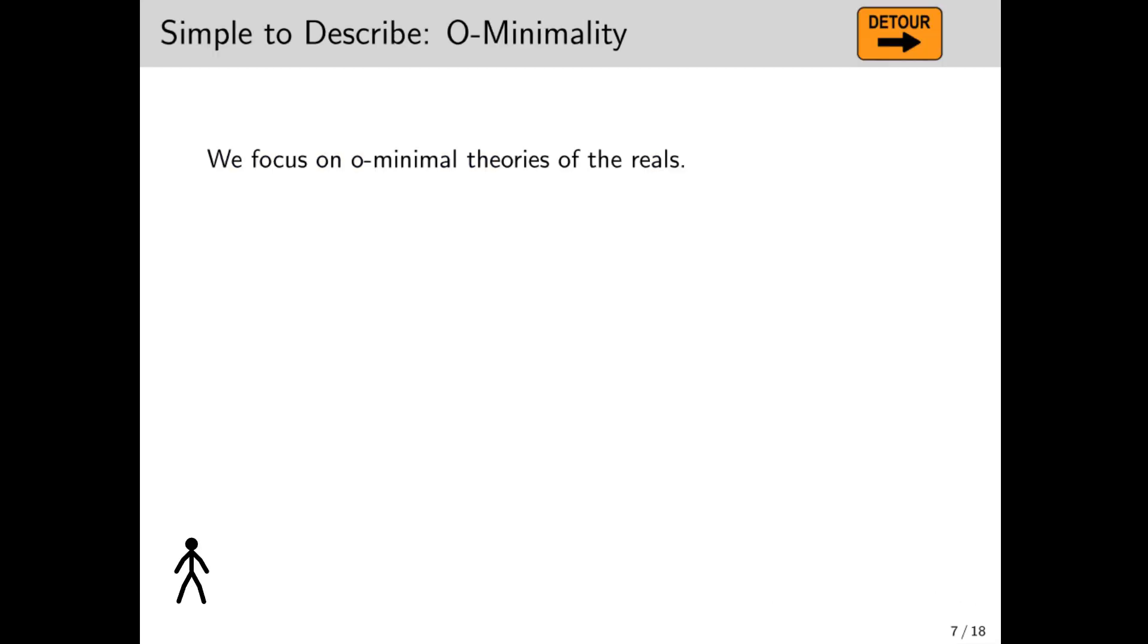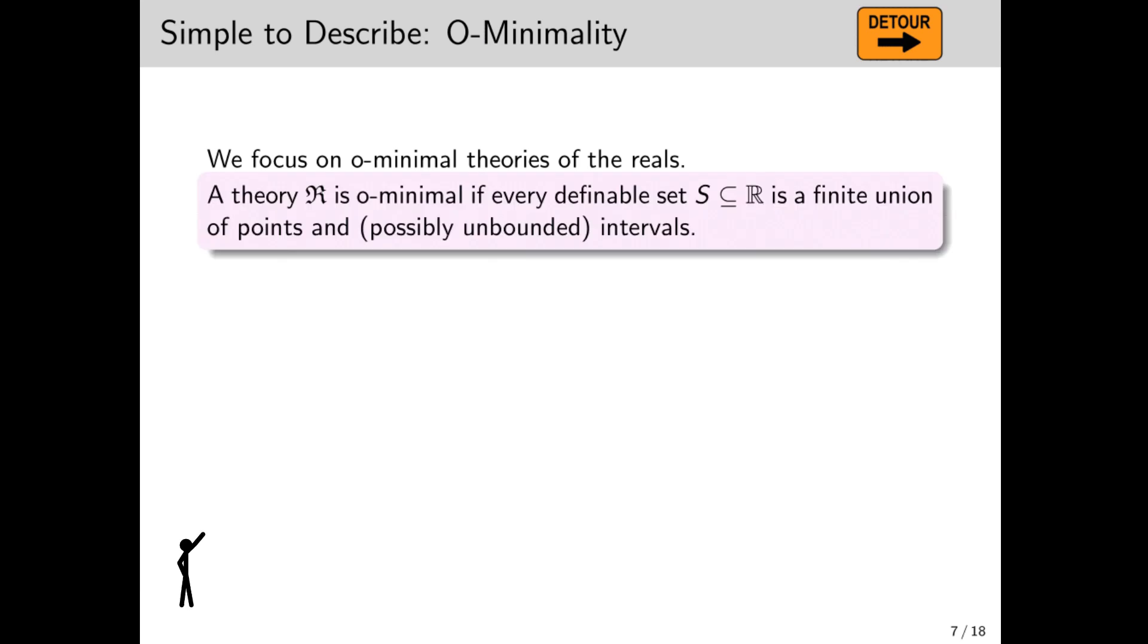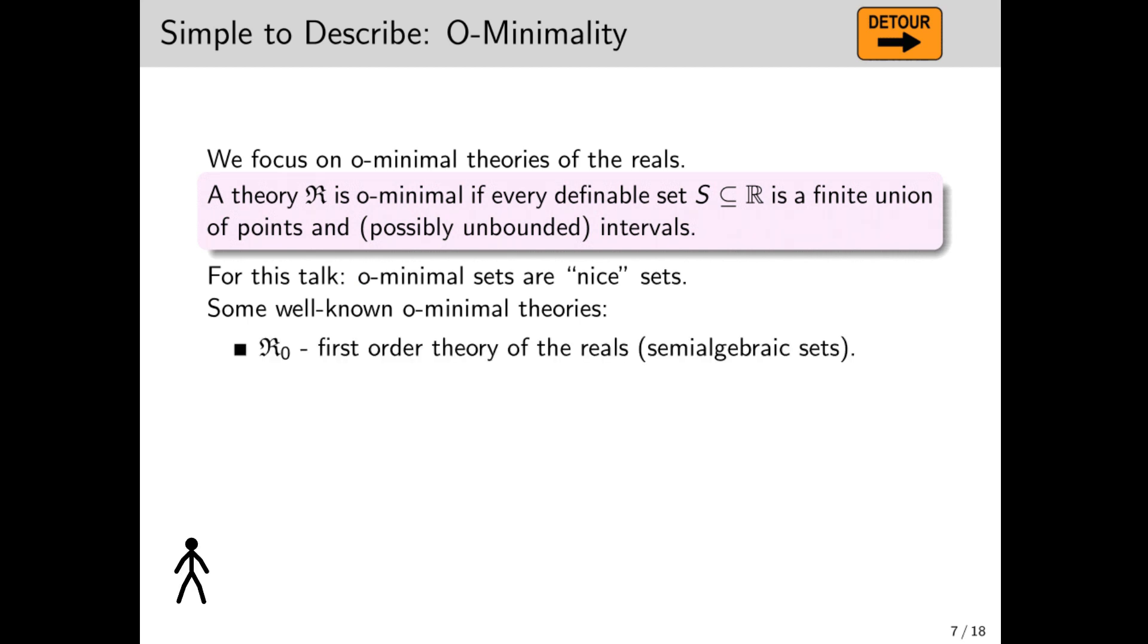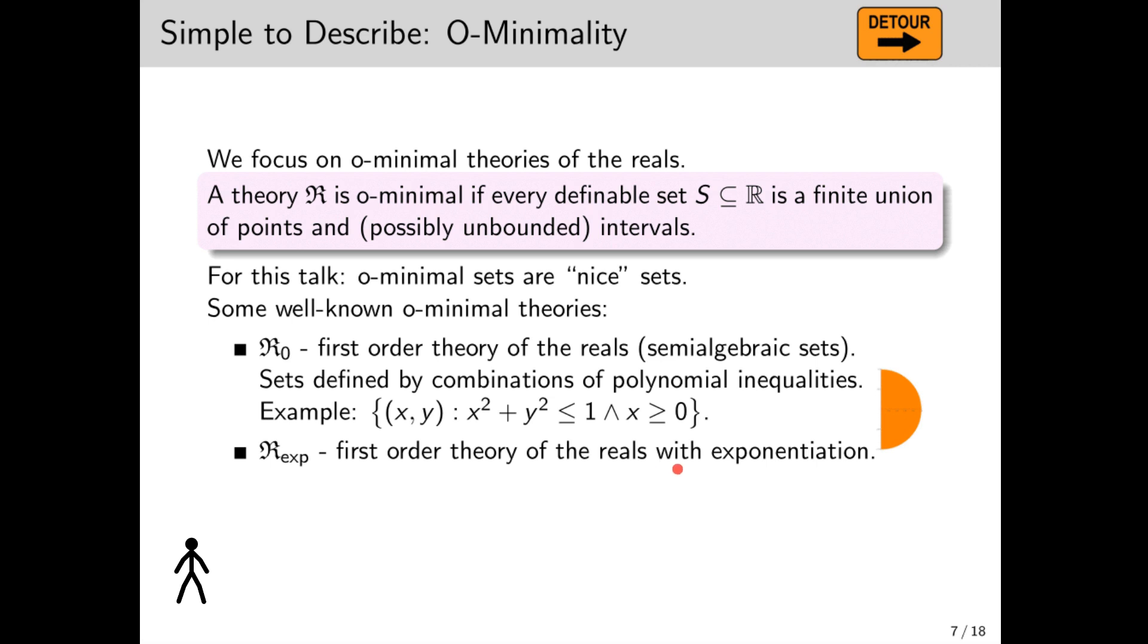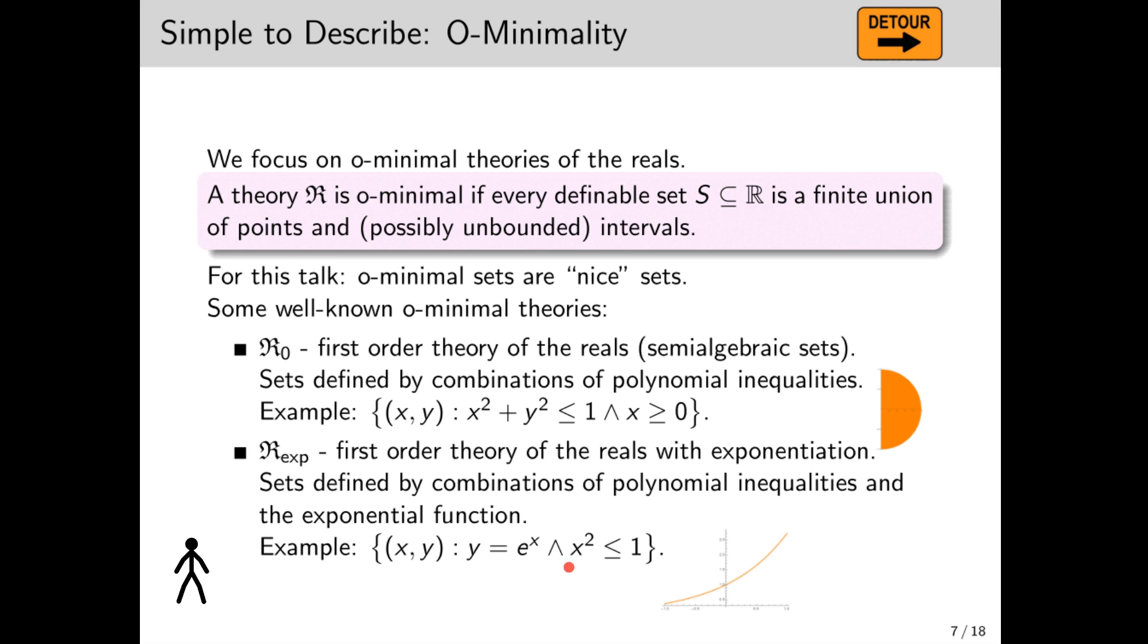Our definition of simple to describe is going to be O-minimal. Formally, an O-minimal theory satisfies this condition, but we're taking the no worries approach and skipping it. For our purposes, O-minimal sets are nice sets. Specifically, we'll focus mostly on two theories, R₀, the first order theory of the reals, in which sets are defined by combinations of polynomial inequalities with integer coefficients. For example, the equations here define the right half of the unit disk. The sets defined in this theory are called semi-algebraic sets. The second theory we look at is R_exp, the first order theory of the reals with exponentiation, where sets are defined by combinations of polynomial inequalities and the exponential function. For example, this set defines the graph of e^x in the interval [0,1], and is R_exp definable. End of detour.